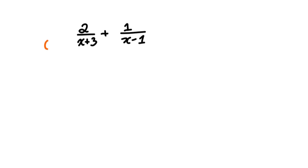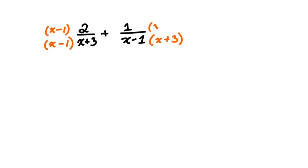So on this side, I'm going to multiply the denominator by x minus 1. And on this side, I'm going to multiply the denominator by x plus 3. However, in order for our rational expression not to change, we need to balance it. What we multiply the denominator by, we need to multiply in the numerator as well. So here, we also need to times by x minus 1, and here by x plus 3.